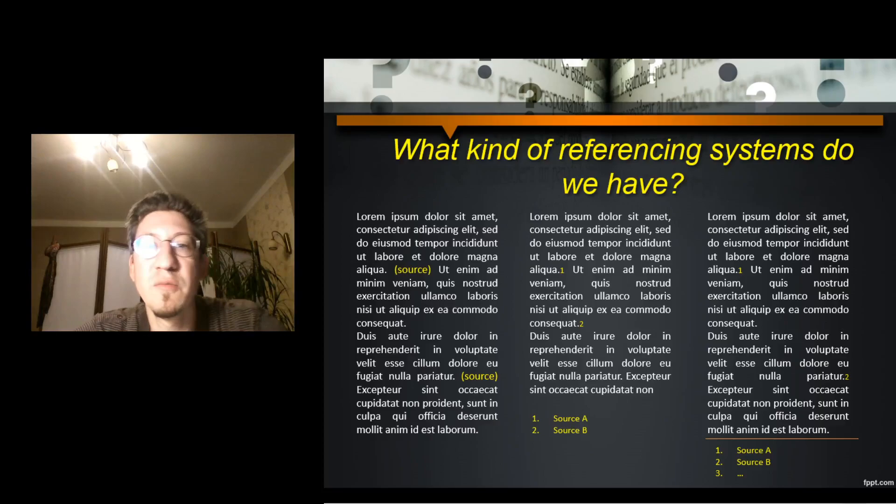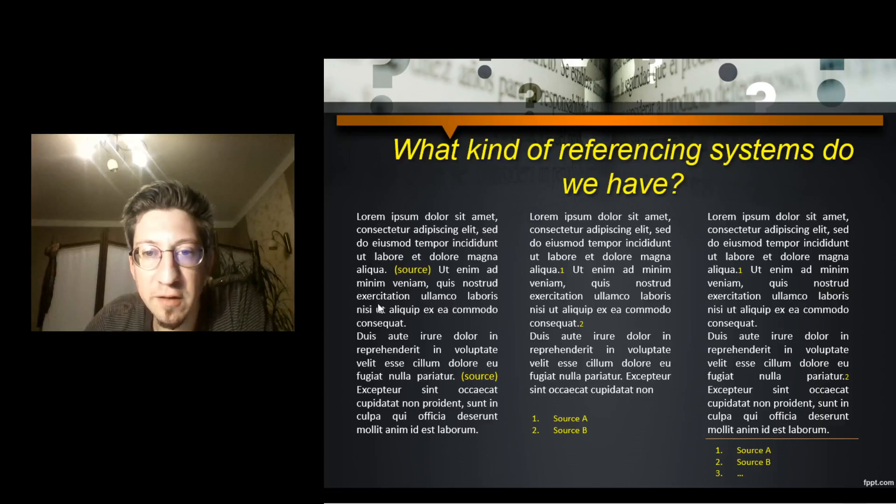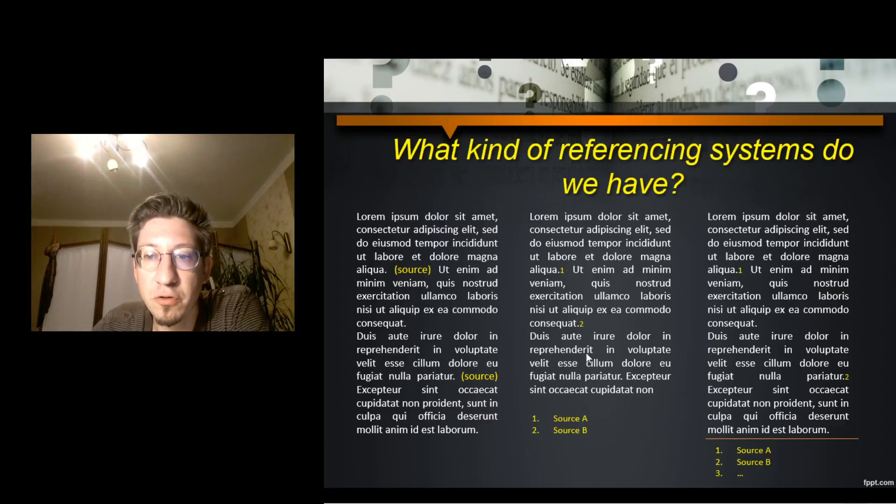So what kind of referencing systems do we have? Well, here I made three examples based on some Latin generic text, just to make my point clear. The first one, as you can see, this is definitely one with in-text references. So the sources are listed directly after the text or a piece of text, the element of text to which they refer. The second one is footnotes. So here we see that we have different numbers, and then at the bottom of the page we have the references themselves. And then the last one is what we call endnotes. Once again, you work with numbers, but only at the end of the text you have a full list of all the references.